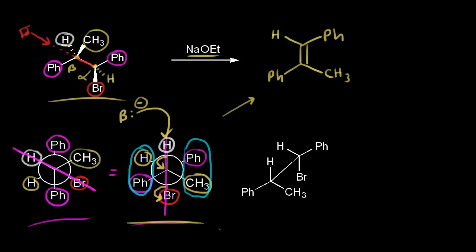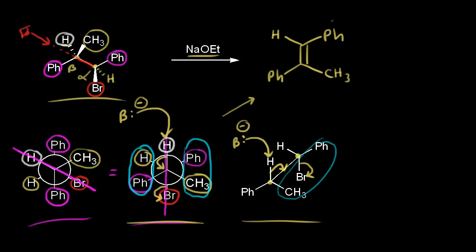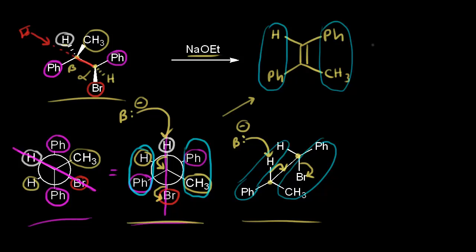Here's a sawhorse projection, another viewpoint which might be easier to see. The alpha carbon and beta carbon are highlighted. The strong base takes the beta proton, the electrons move in to form the double bond, and the electrons come off onto the bromine. The phenyl group and the methyl group end up on the same side, and on the other side you have the other phenyl group and the hydrogen. The two phenyl groups are on opposite sides of the double bond — this is the E-alkene.